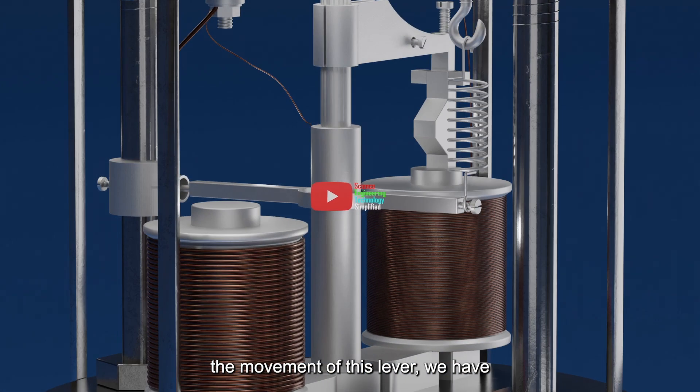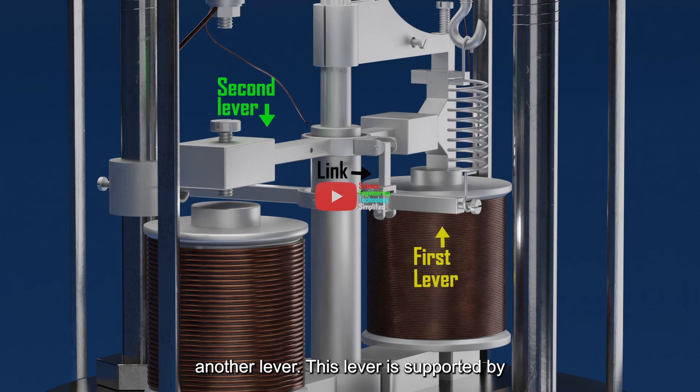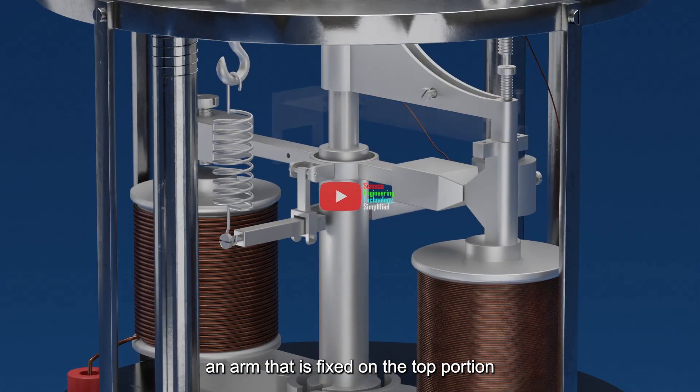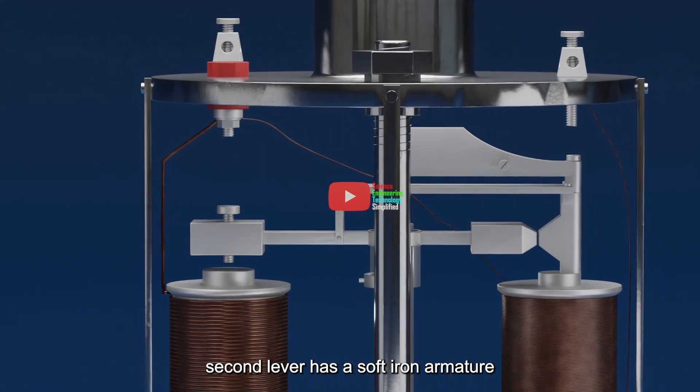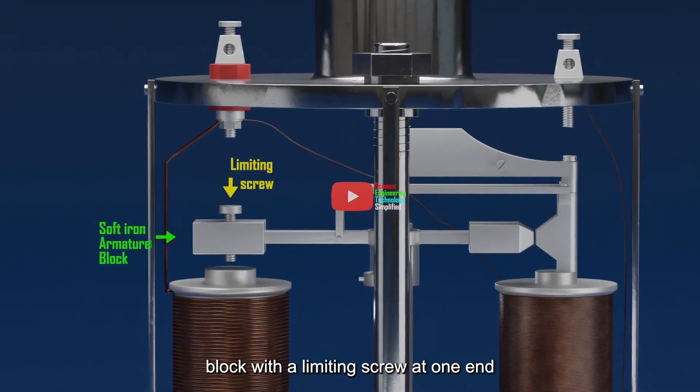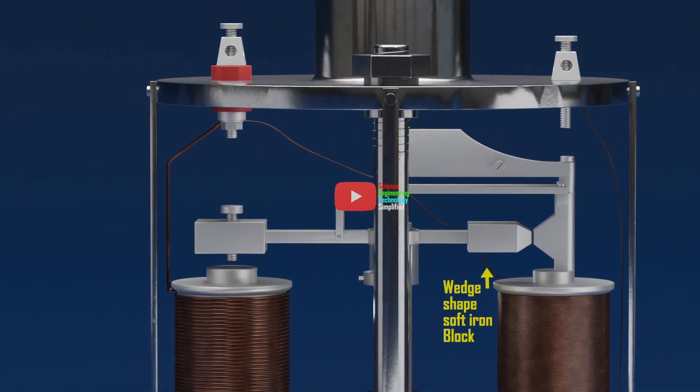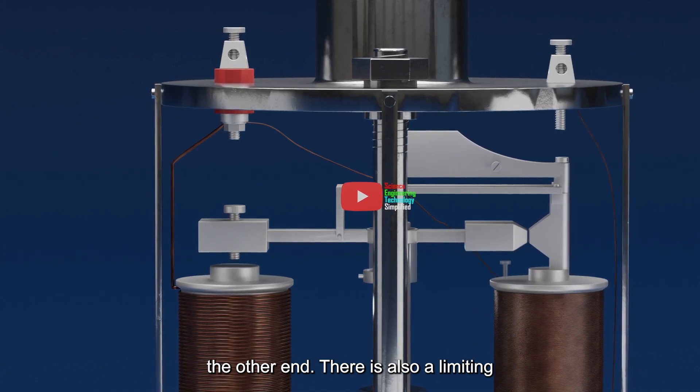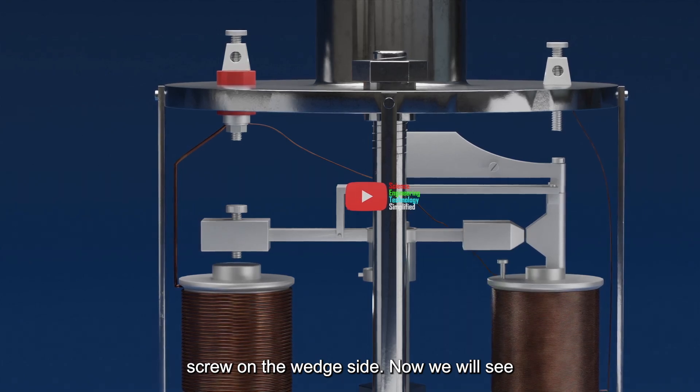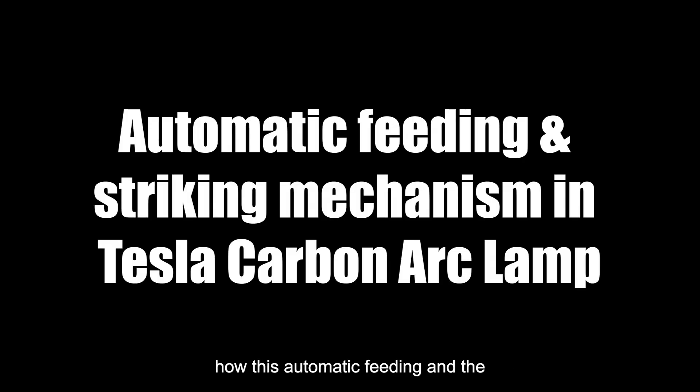To control the movement of this lever, we have another lever. This lever is supported by an arm that is fixed on the top portion of the core of the fine helix. This second lever has a soft iron armature block with a limiting screw at one end and a wedge-shaped soft iron block at the other end. There is also a limiting screw on the wedge side. Now we will see how this automatic feeding and the striking mechanism works.